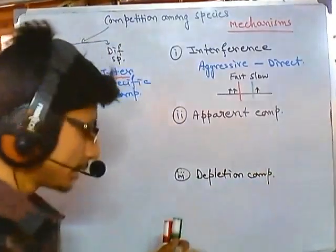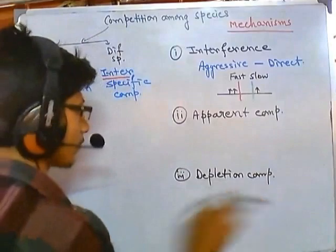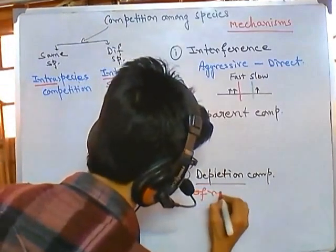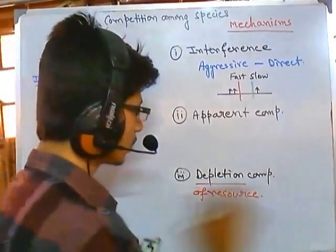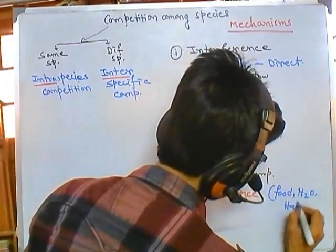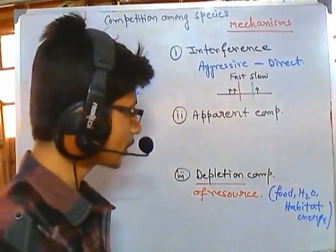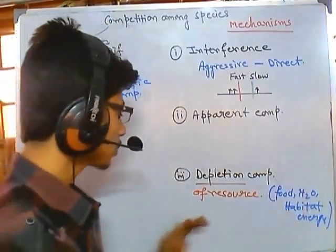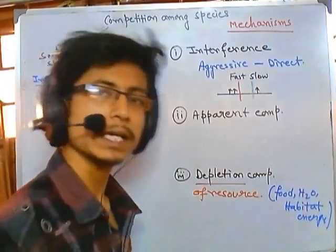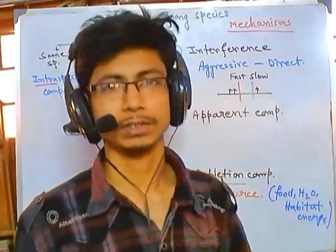The second type is depletion competition. In this case, there is depletion of a shared resource. Resources can include food, water, habitat, and energy. When organisms share a common food source, common water, or common habitat, there must be competition between them, because competition occurs whenever there is sharing of a common resource. Depletion-type competition occurs between populations and also at the community level.